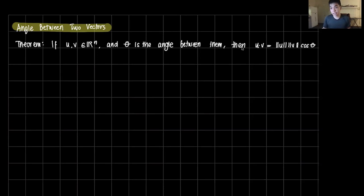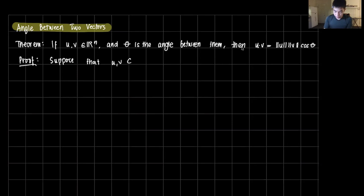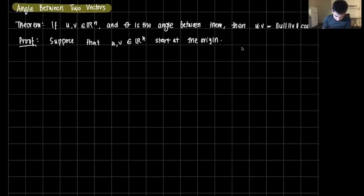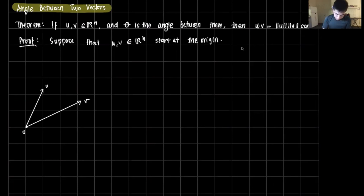Let's start with the proof. Suppose that u and v are in R-n and that they start at the origin. To visualize that, let's draw a graph. The origin is here at zero, and let's say this vector is v, and this one here is vector u. So we have two vectors.